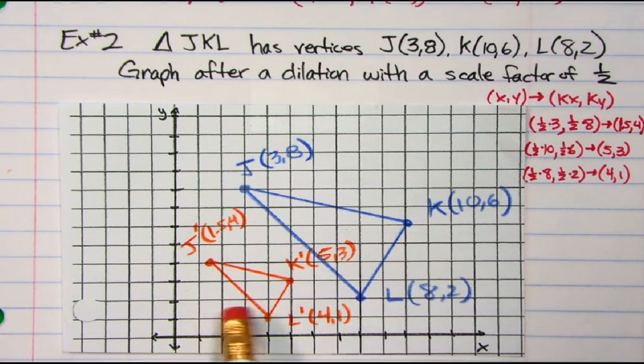So I'll start off with, I'll show you everything here. I start off in this blue one. So (3, 8) was J, (10, 6) was K, and L was (8, 2). So this is the blue one here.